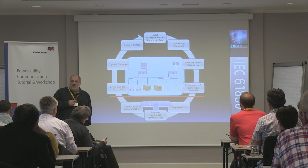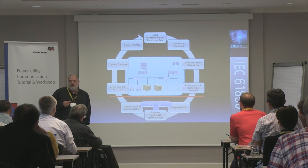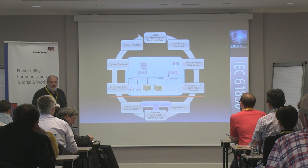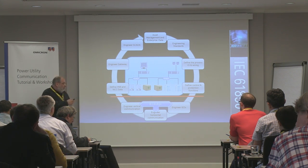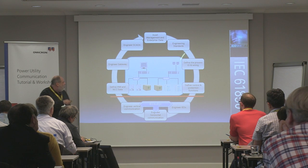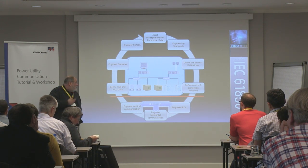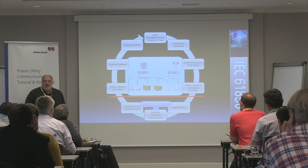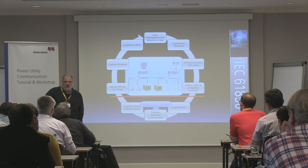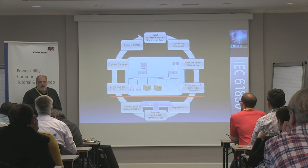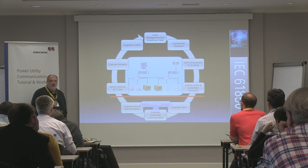Based on these engineering standards, the utilities specify a system that they want to buy — whether they buy turnkey or do it themselves. Then project engineers start to implement the system: they think about what devices they need, how the process looks, define all the inputs, outputs, wiring, and naturally the control and protection functions. Then the boss comes and says, now we make 61850, and we make it turnkey. So they give out a written specification — maybe 400 pages for one substation with one sentence saying it should be 61850.